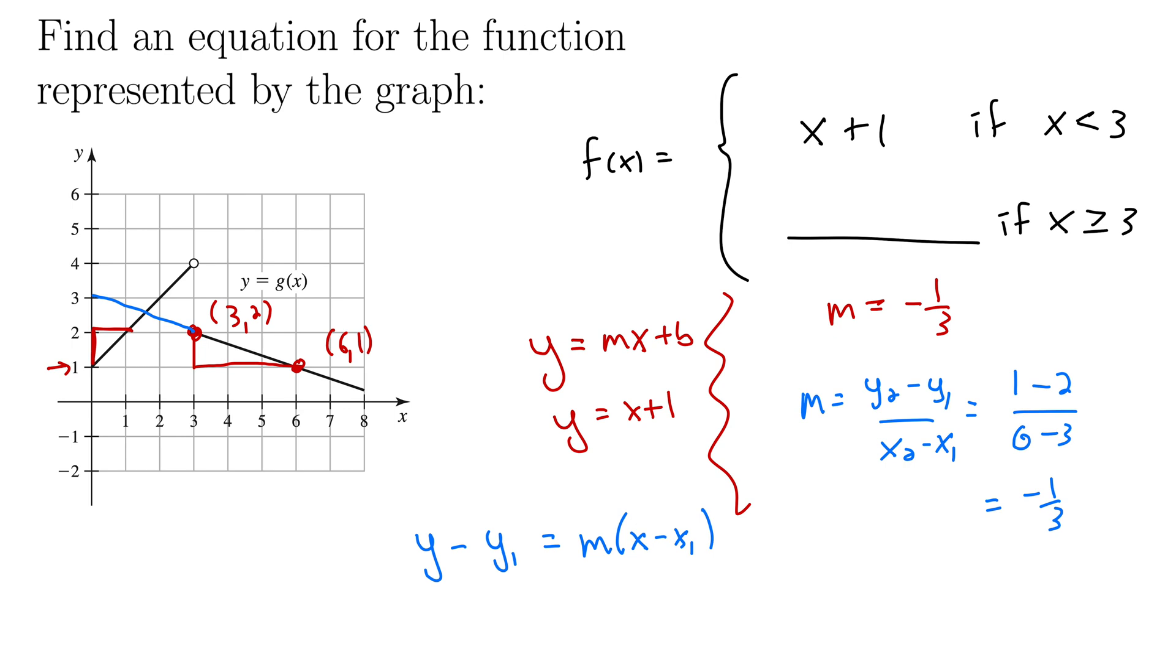Y minus y1 equals m times x minus x1, just to be absolutely certain that that y intercept is indeed 3. And you can pick either point you want. I'll use 3, 2. So we'll call 3 x1 and 2 y1. So y minus 2 equals negative 1 third times x minus 3. Simplify that out, we get y minus 2 equals negative 1 third x plus 1. Adding 2 to both sides we get negative 1 third x plus 3 indeed. So it turns out our y intercept was 3 after all.